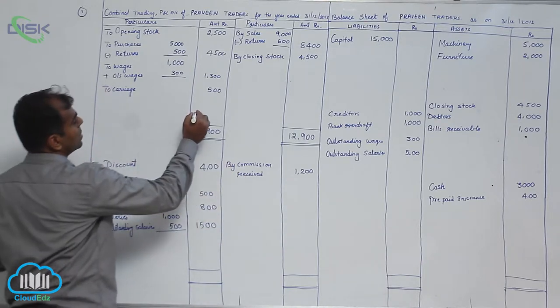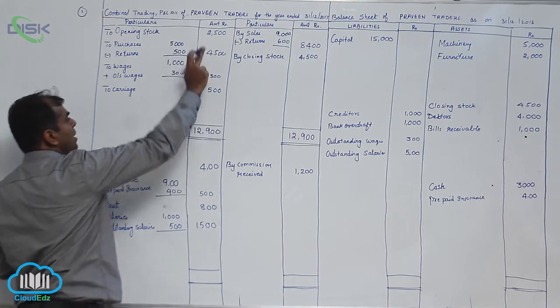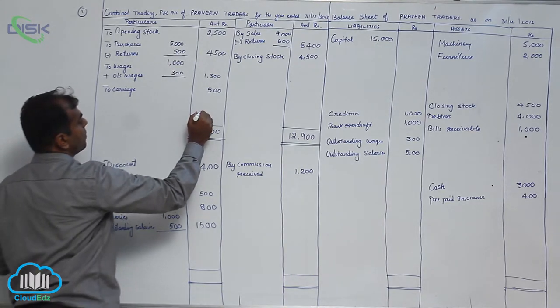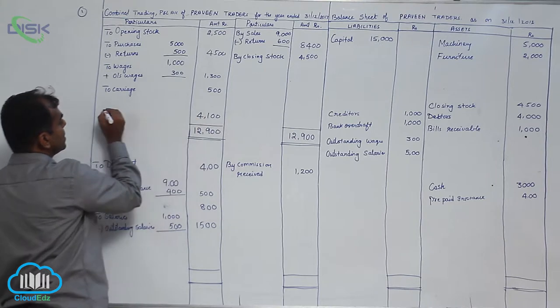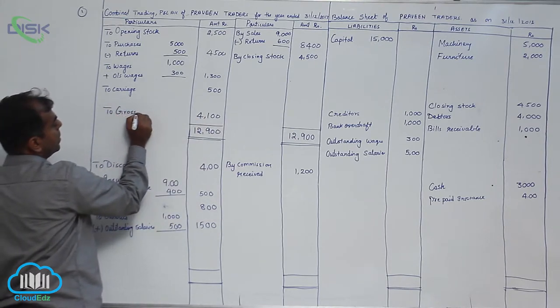The difference we will write as gross profit. So $2,900 minus all your debit side accounts gives you $4,100. This is what we write as to gross profit carried down.